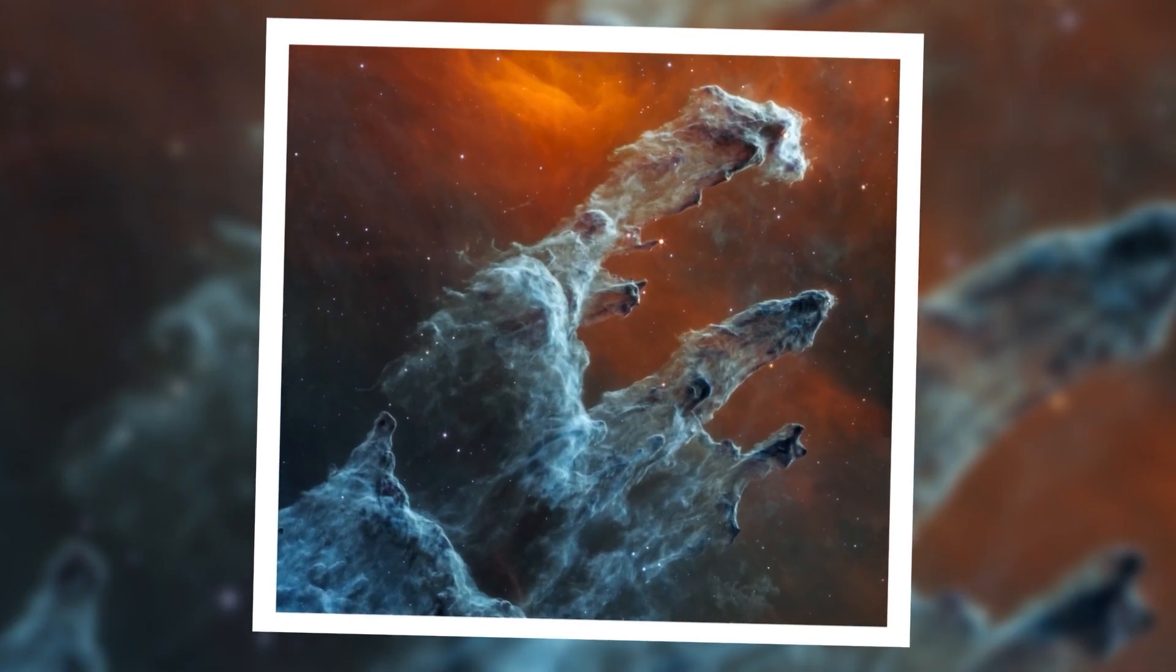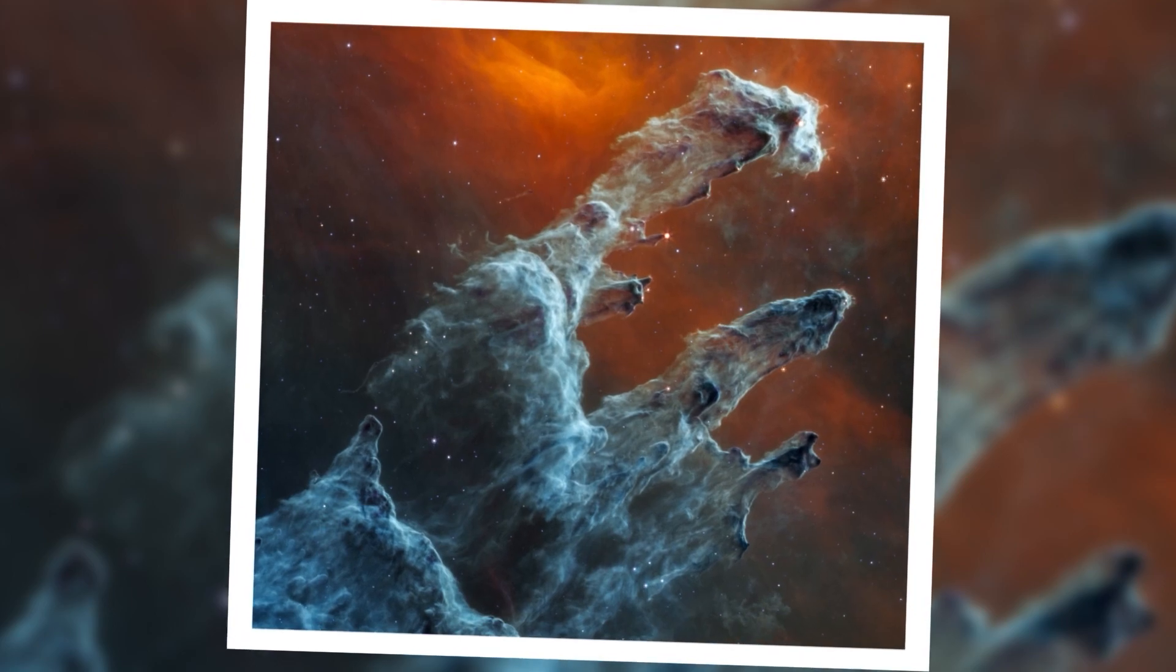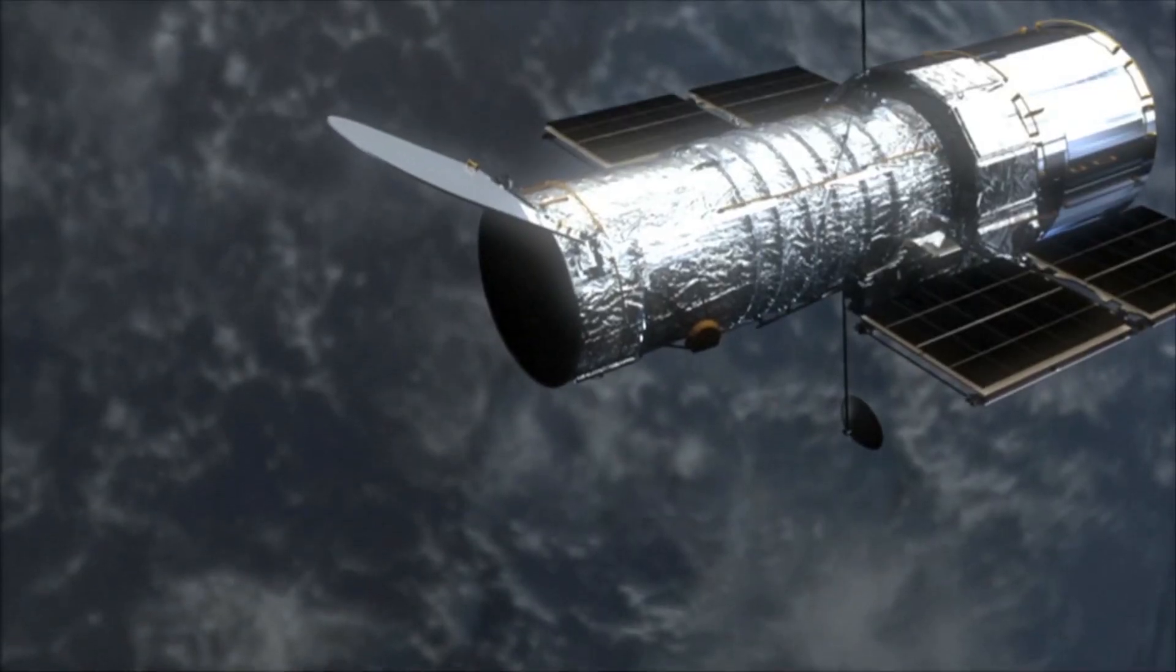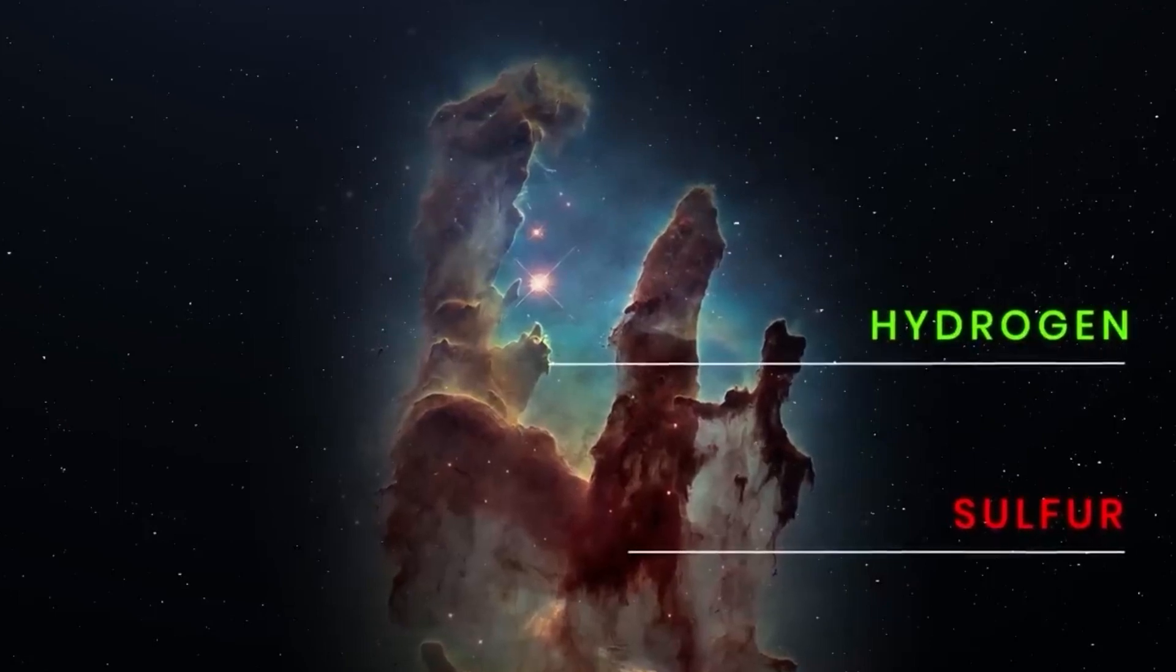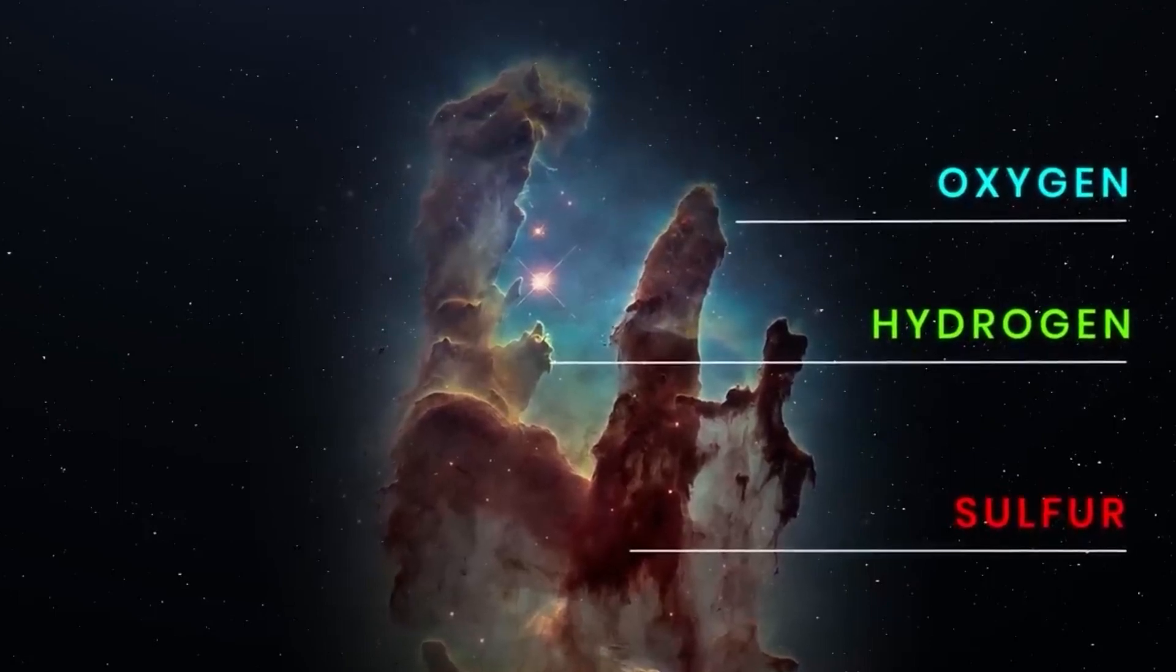Each element is represented by a different color and corresponds to Hubble's palette. Similar to the Crab Nebula image, sulfur is shown in red, hydrogen in green, and oxygen in blue.